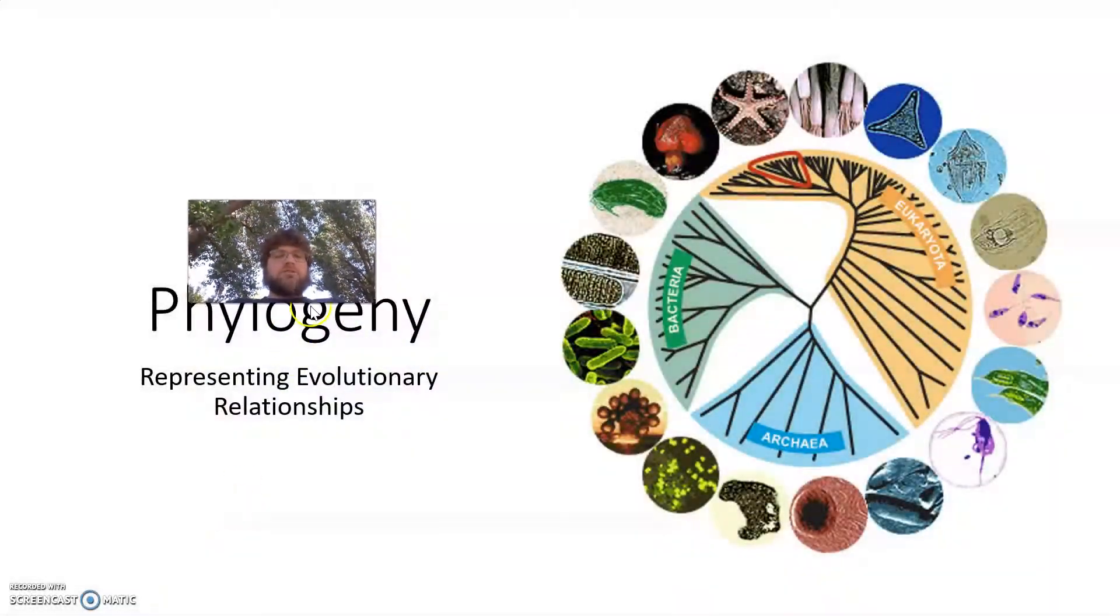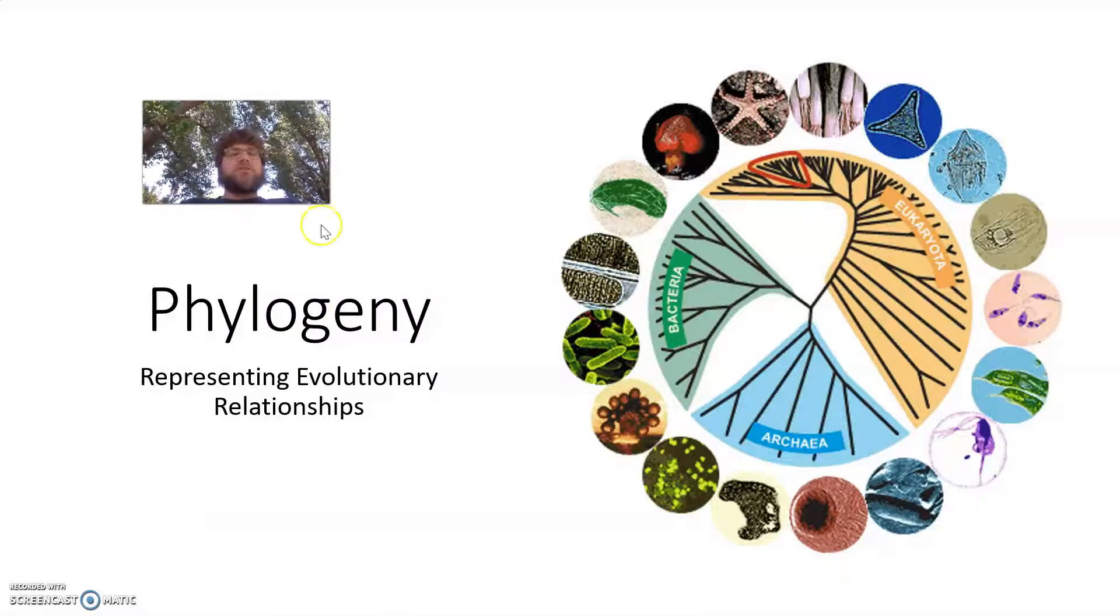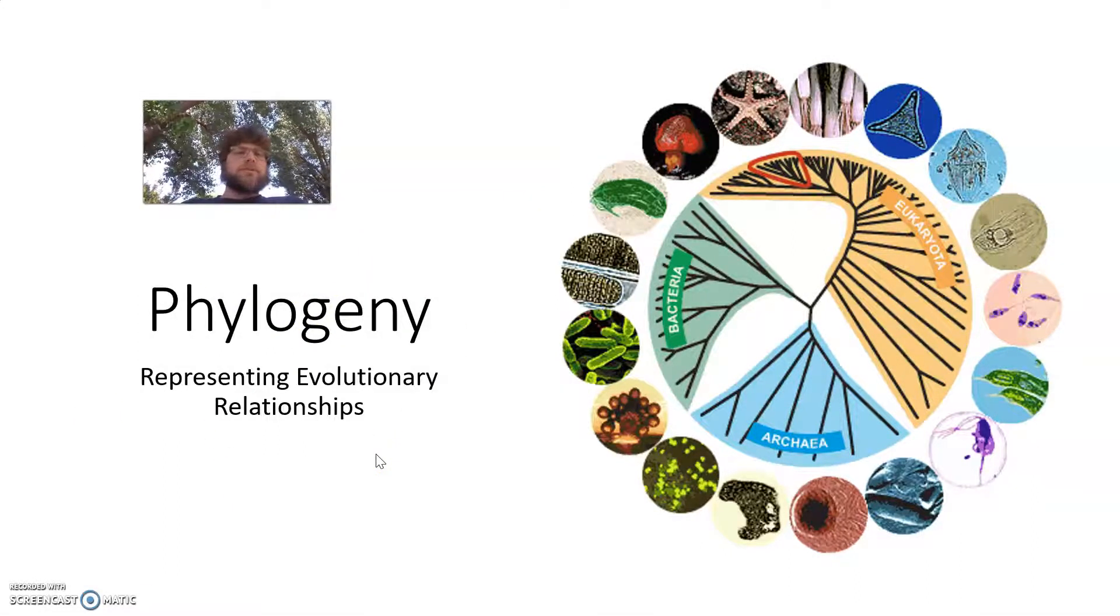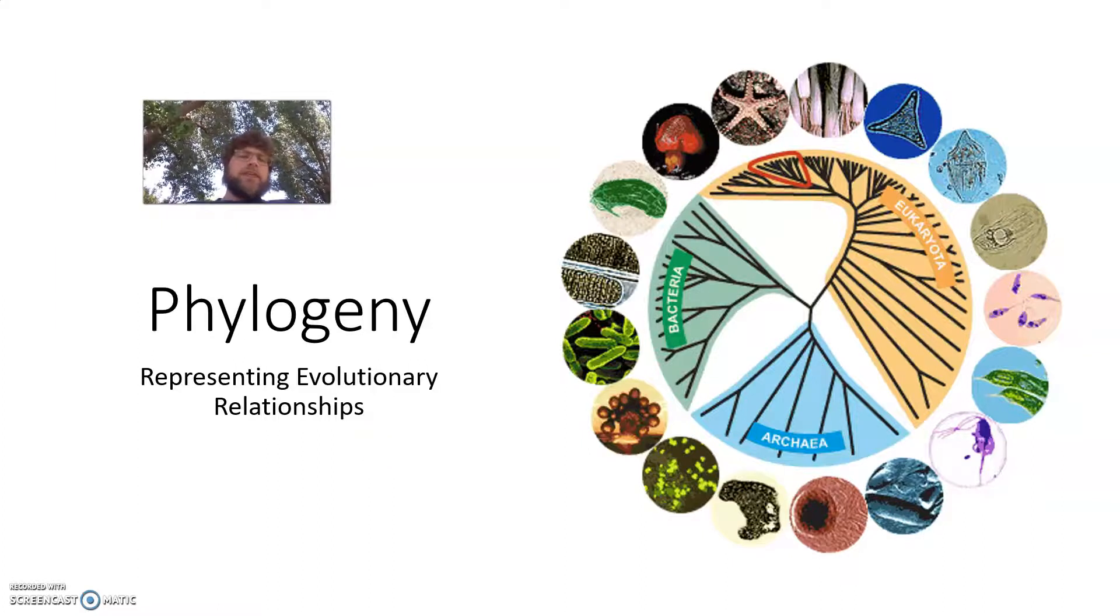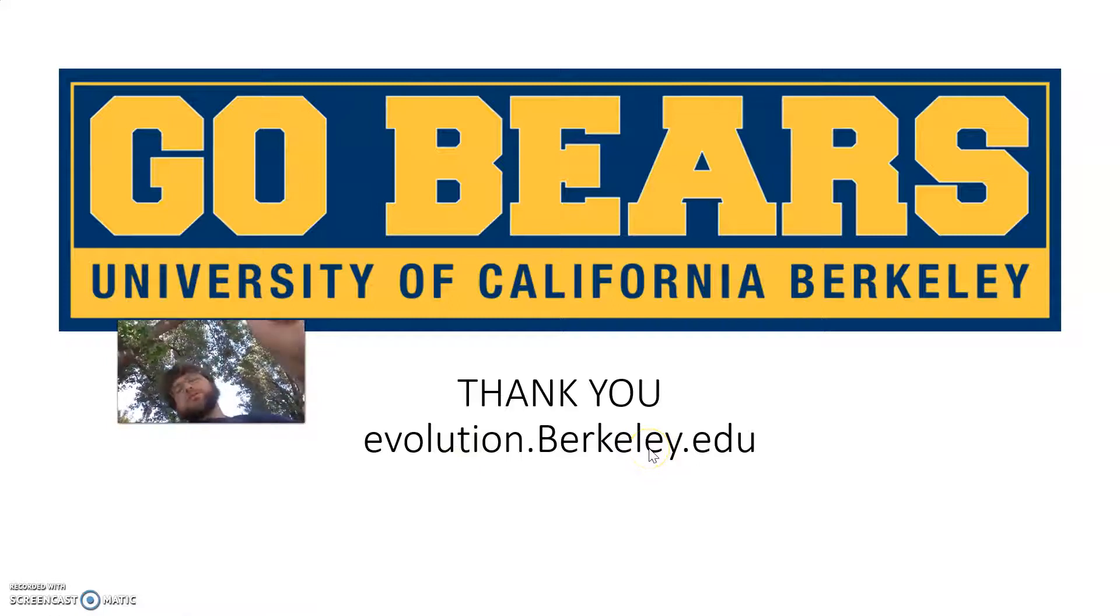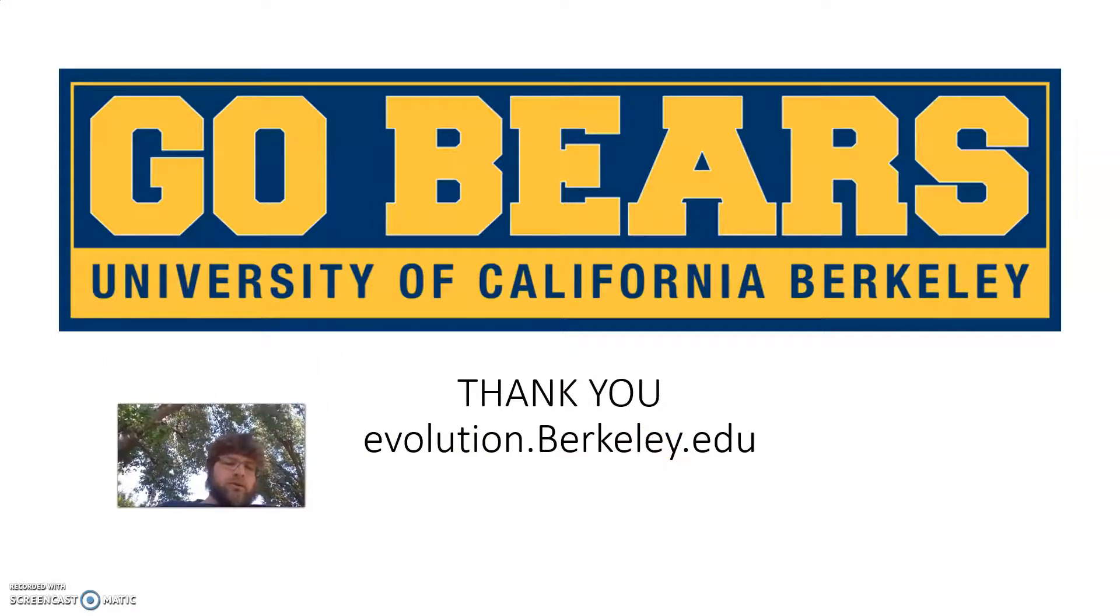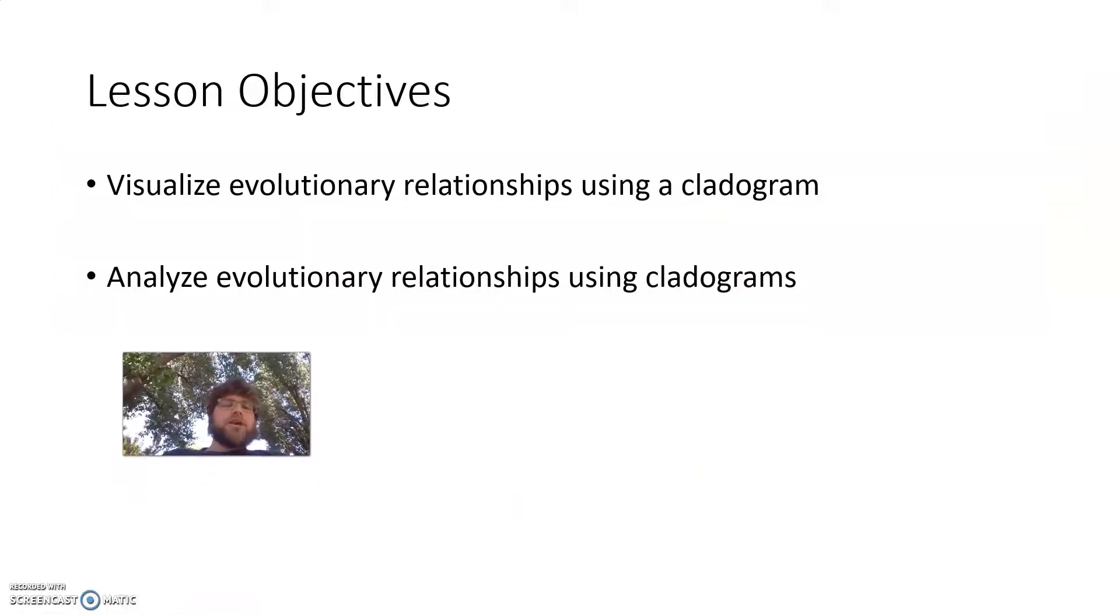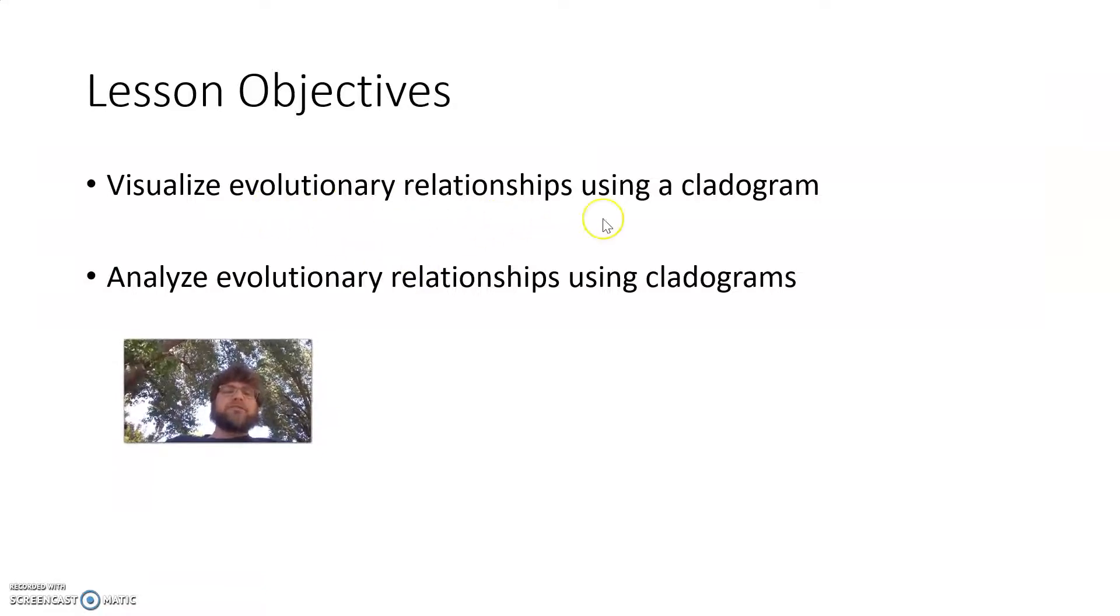Anyways, we're going to continue a discussion on phylogeny. So this week's new topic is phylogeny, representing evolutionary relationships. And I want to again thank evolution.berkeley.edu. Go Bears! Best university in the world. This is an awesome website, and I use the images from it to help make this video. Alright, so our objectives this week, we want to visualize evolutionary relationships using cladograms and analyze those relationships using a cladogram.